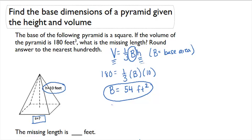Now that I know the base area and that my base is a square, I can figure out what S is. S is just going to be 54 equals S squared. So S is the square root of 54, which is approximately 7.348. The problem tells me to round to the nearest hundredth.